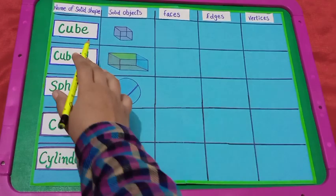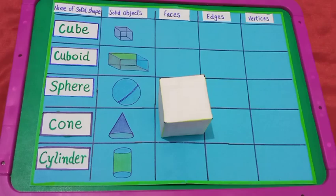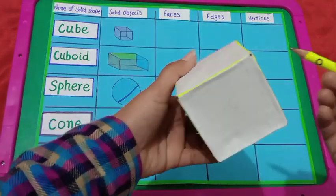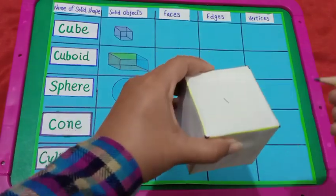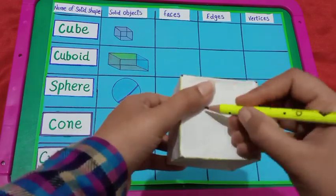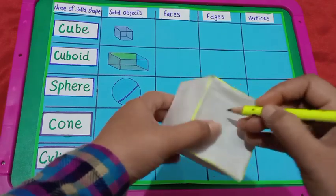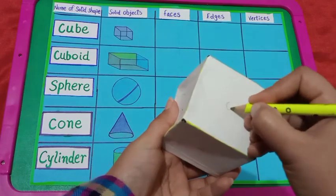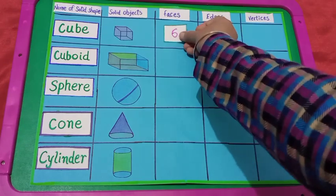The first shape is cube. Dear students, this shape is like a cube. These are the faces of the cube. Let's count its faces: 1, 2, 3, 4, 5, 6. So, students, a cube has six faces.